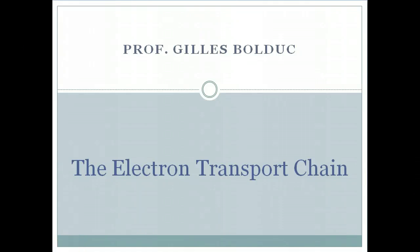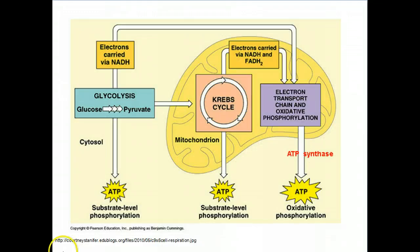Welcome, this is Professor Bolduc and this is the discussion lecture on the electron transport chain. So let's begin with the molecules NADH and FADH2. These molecules are coenzymes. They are also electron acceptors or electron transporters. They are the molecules that are going to set off this series of reactions known as the electron transport chain. So, where did they come from?